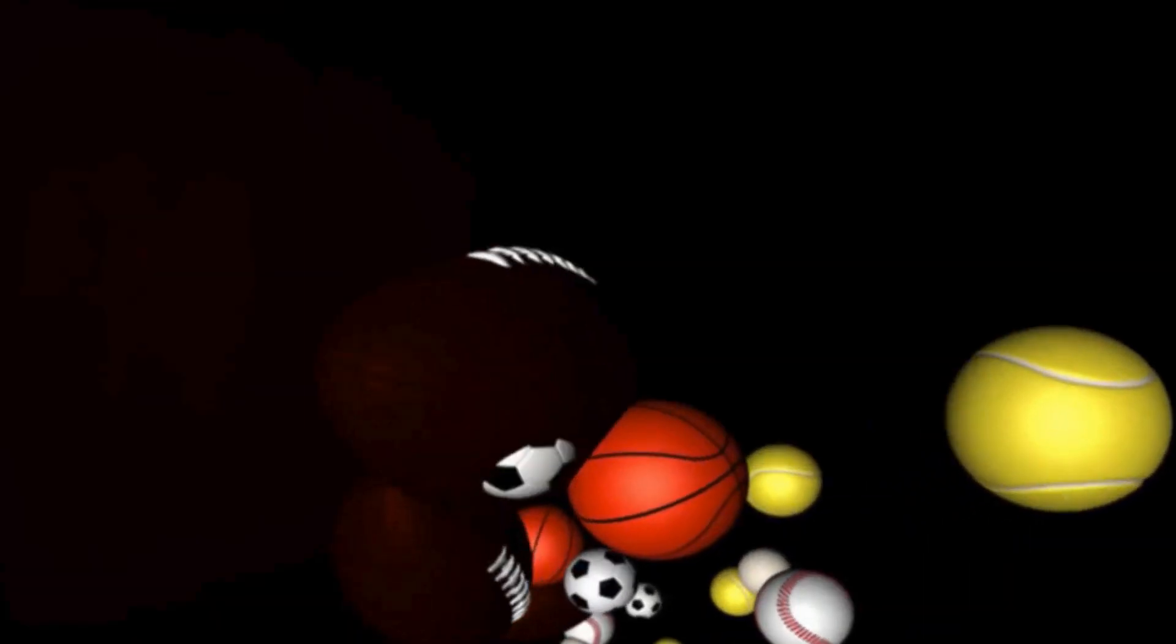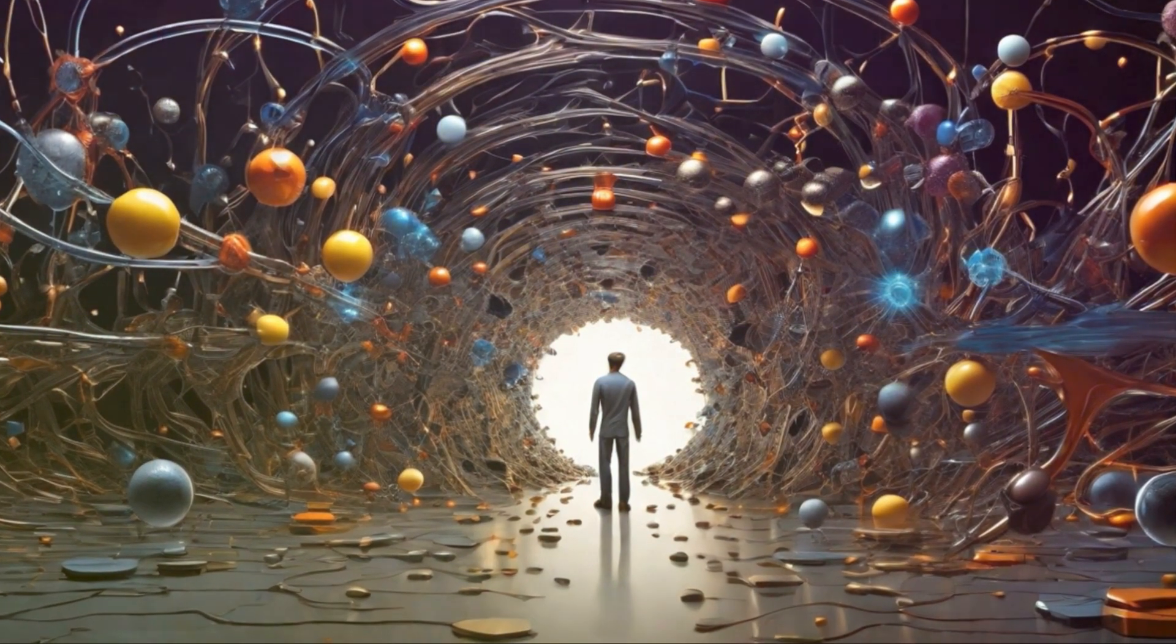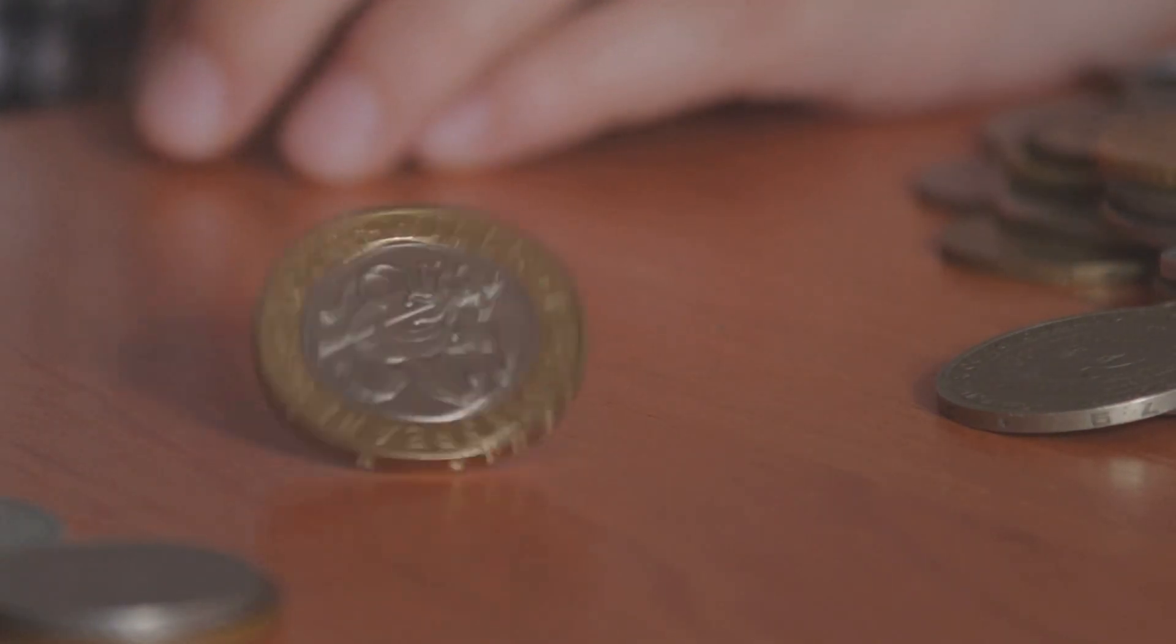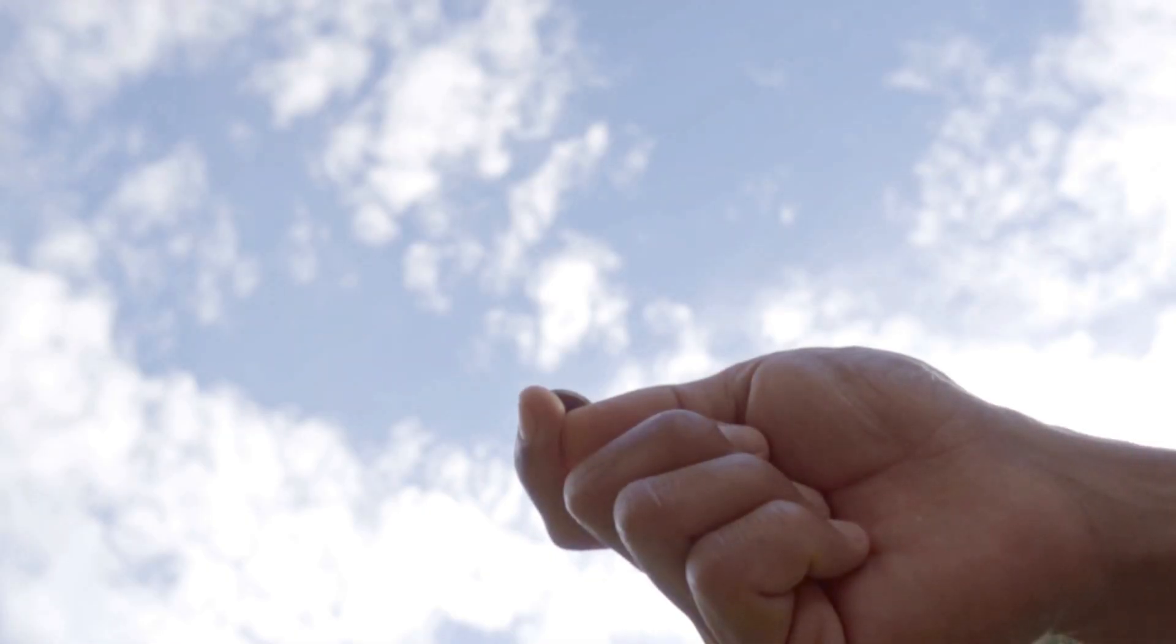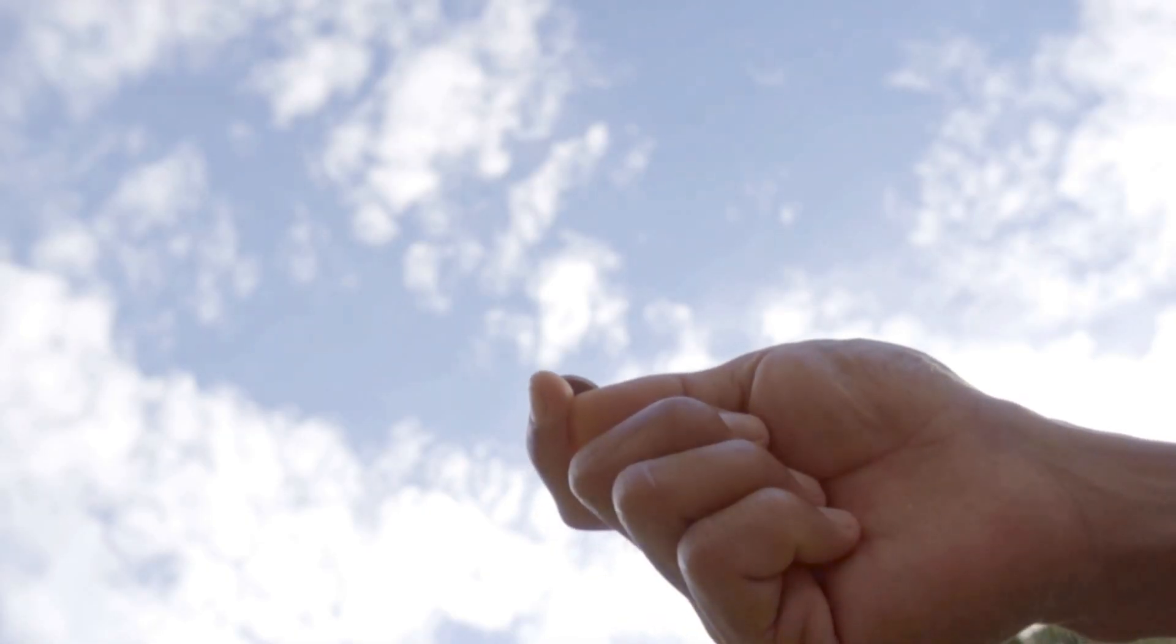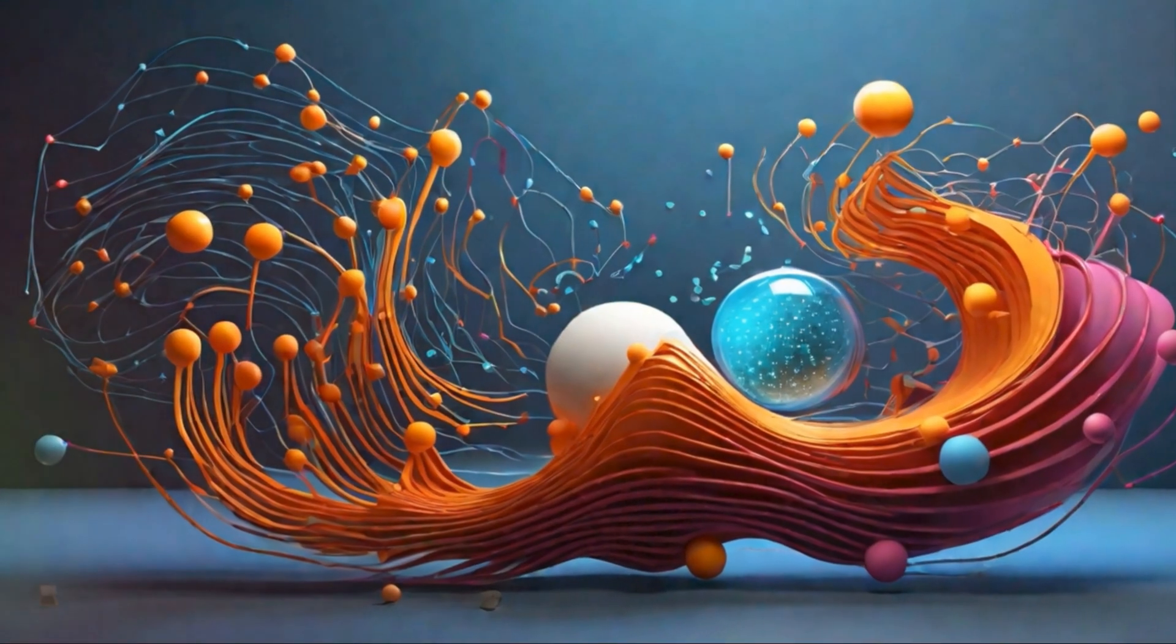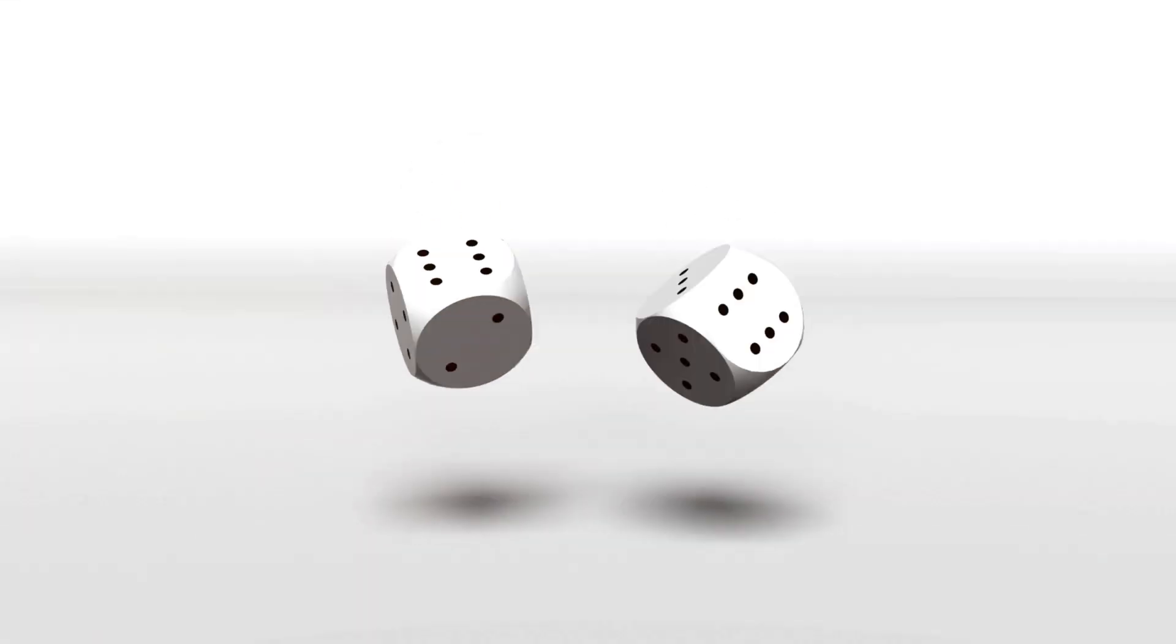This isn't the stuff of science fiction, it's the science of the very small, the science of quantum mechanics. Quantum mechanics operates on principles that seem utterly alien when compared to our everyday experiences. One of these principles is superposition. Picture a spinning coin. Until it lands you can't definitively say whether it's heads or tails. It exists in a state of uncertainty, a superposition of both states.